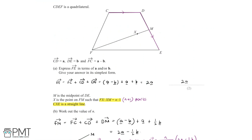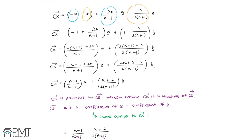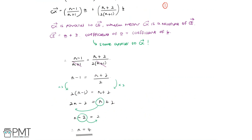This question is worth 6 marks. The first mark is for writing FE equals (a minus b) plus a plus b. The second mark is for simplifying to FE equals 2a. The third mark is for finding FM equals 2a minus half b. The fourth mark is for the process to find vector CX. The fifth mark is for setting (N minus 1)/(N plus 1) equal to (N plus 2)/(2(N plus 1)). The sixth mark is for solving to get N equals 4.